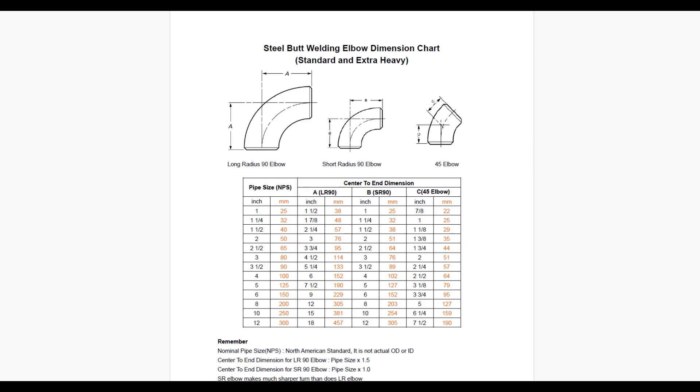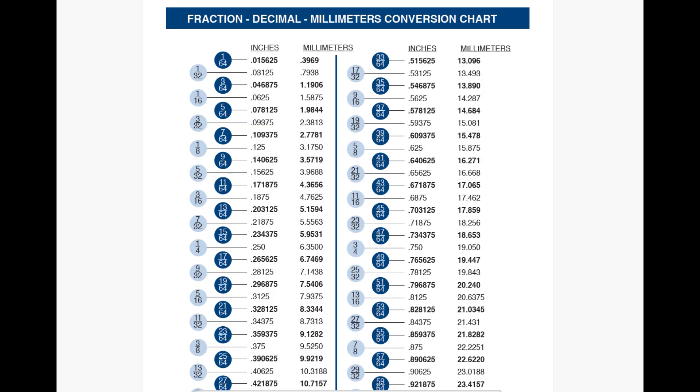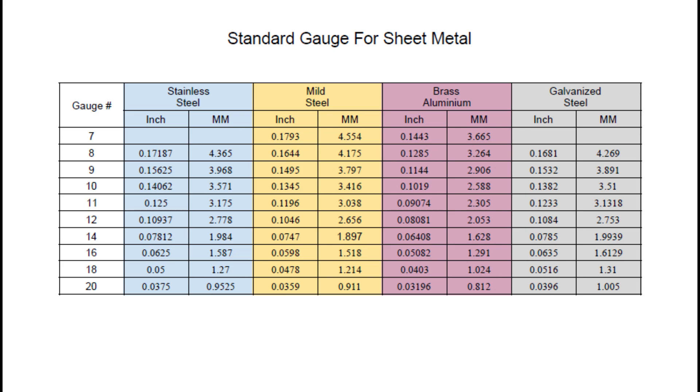They are elbow dimension chart, welding symbol, fraction and decimal conversion chart, pipe dimension chart, and sheet metal gauge chart.